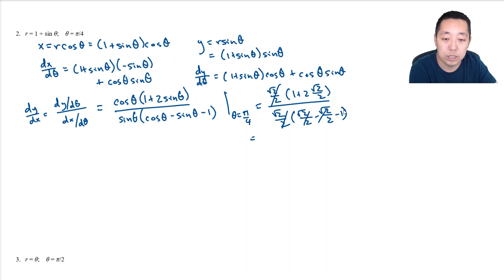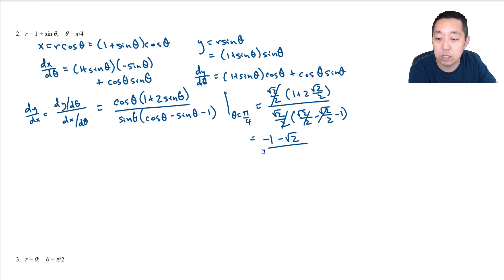After simplification, the denominator reduces to negative 1. So dividing by negative 1 just makes the expression negative, giving us a slope of negative 1 minus root 2.